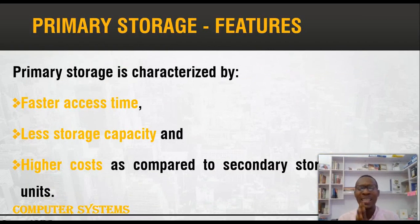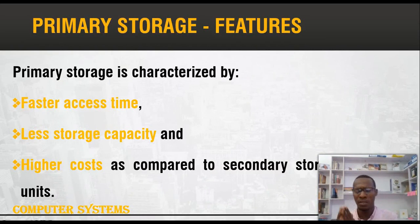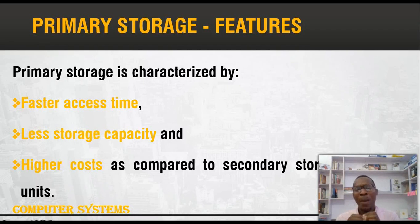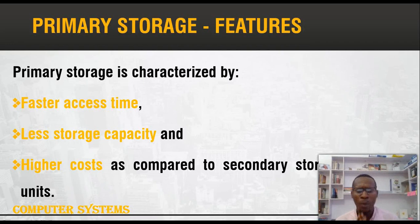Primary storage devices are characterized by three main factors: number one is access time, number two is storage capacity, and number three is cost. Primary storage has faster access time compared to secondary storage. It has less storage capacity — our RAMs are 2GB or 4GB — while secondary storage goes up to 500GB or 1 terabyte. However, primary storage is more expensive compared to secondary storage.